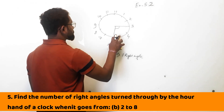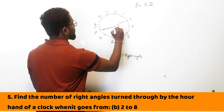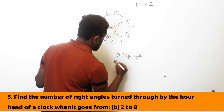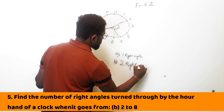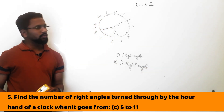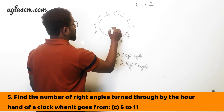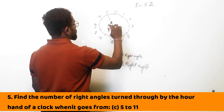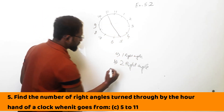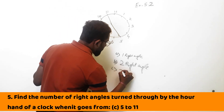2 to 8: you are at 2 and going to 8, so you are making 2 right angles. 5 to 11: you are at 5 and going to 11 — again making 2 right angles.